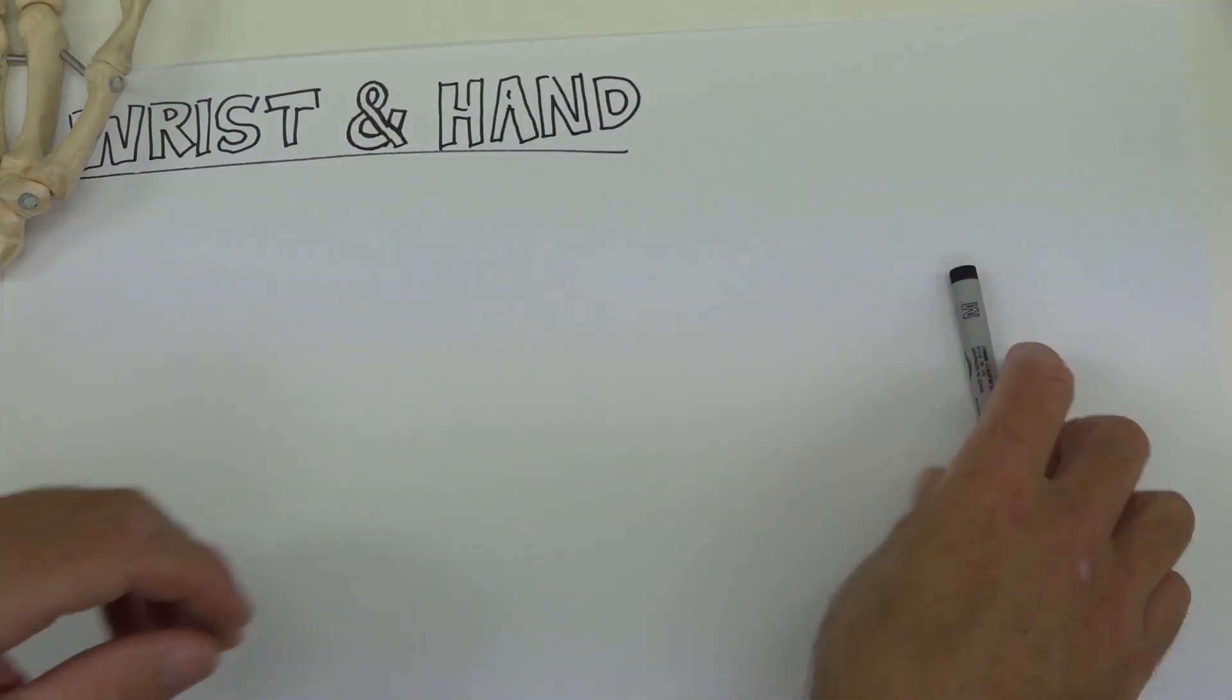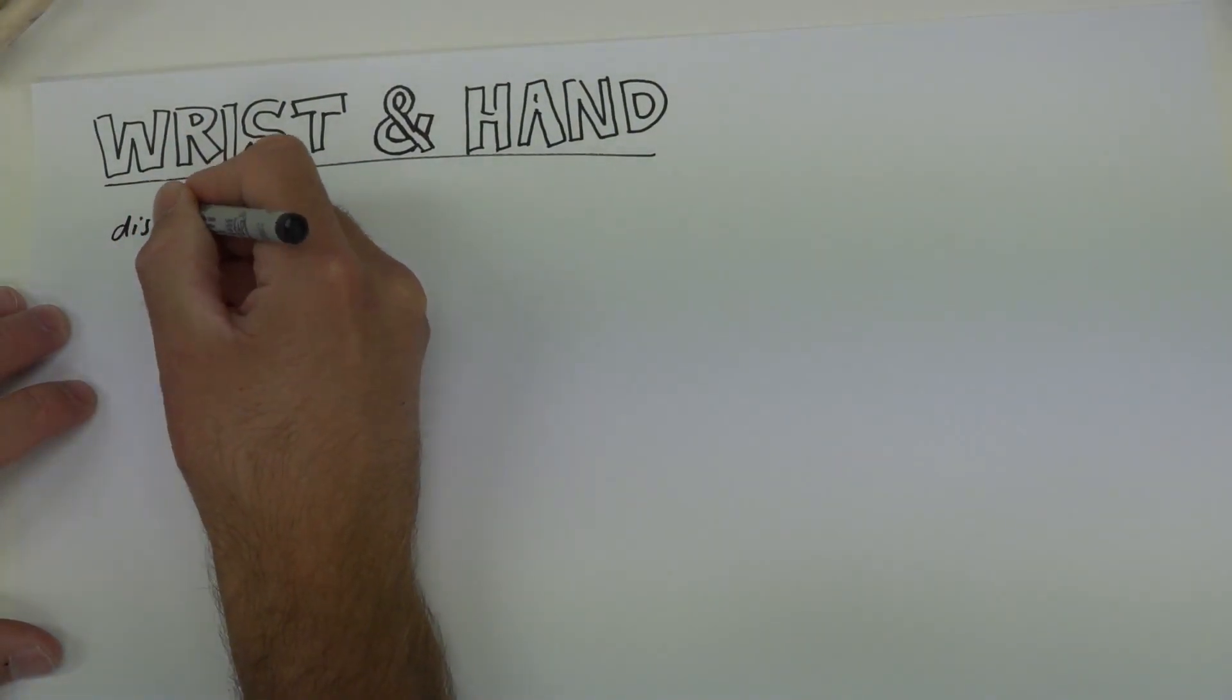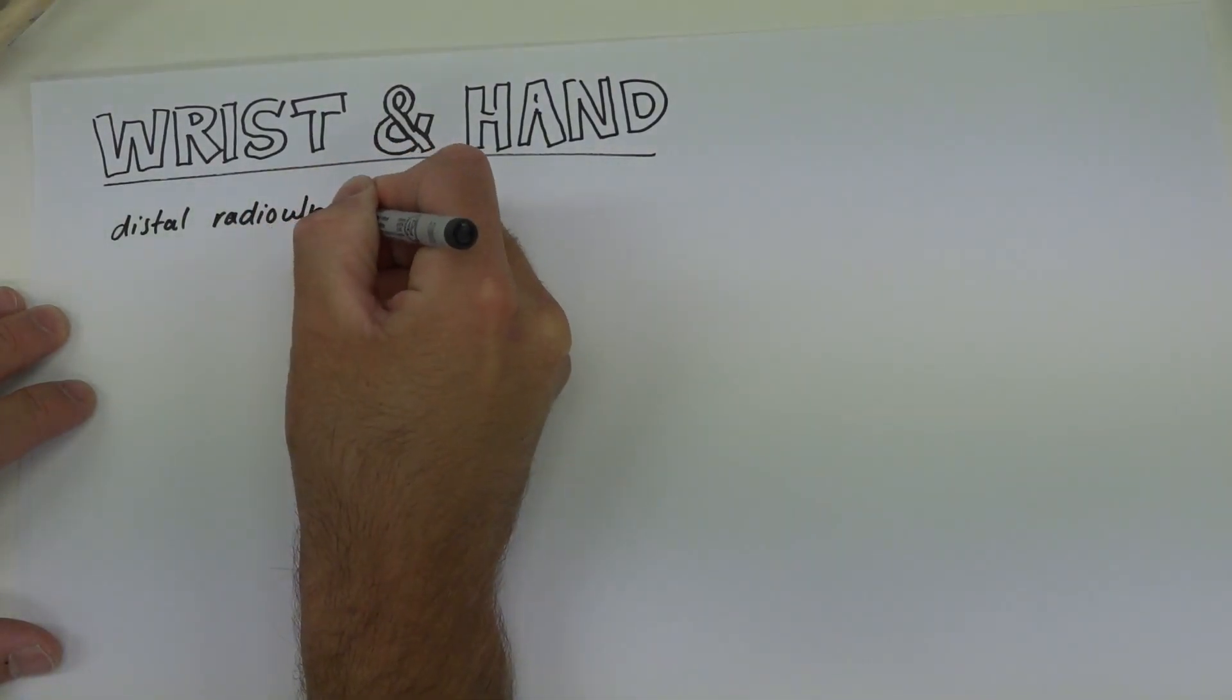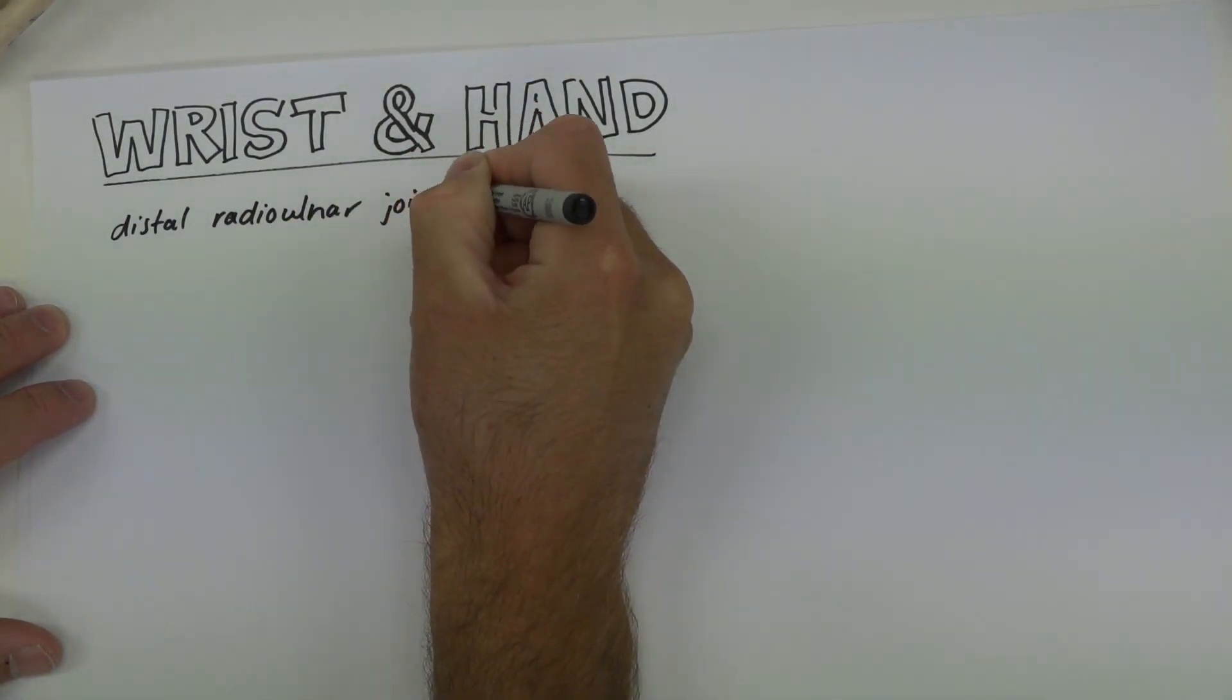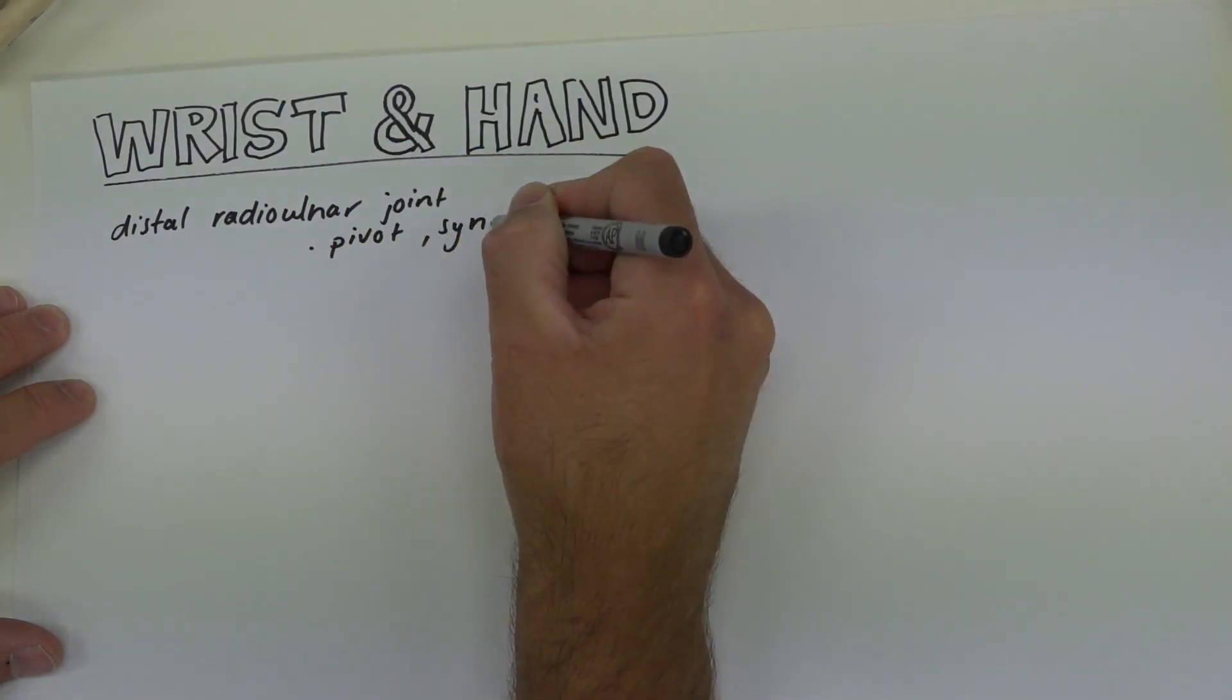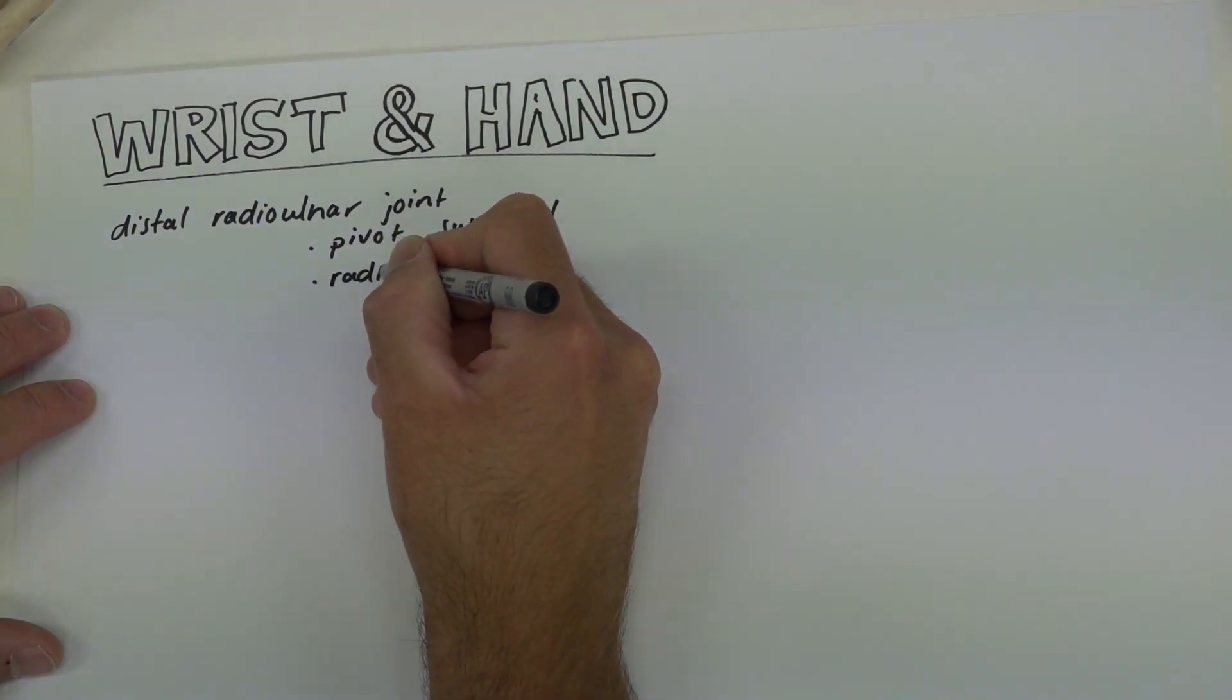At the wrist, specifically the distal radioulnar joint, we have a pivot type articulation which is synovial and it's the radius which pivots.